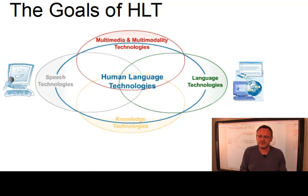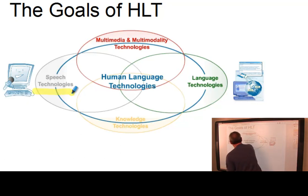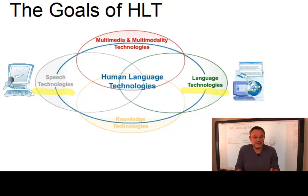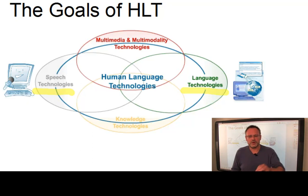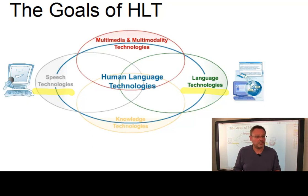Guided by theoretical as well as practical goals, work on human language technologies — the abbreviation is HLT — aims to enable computers to process spoken, that is speech, as well as written language in intelligent ways, in order to make it easier for humans to access and produce information and to communicate with one another and with machines. The common work on human language technologies is to develop computational models of language that have sufficient detail to support various tasks involving natural language.